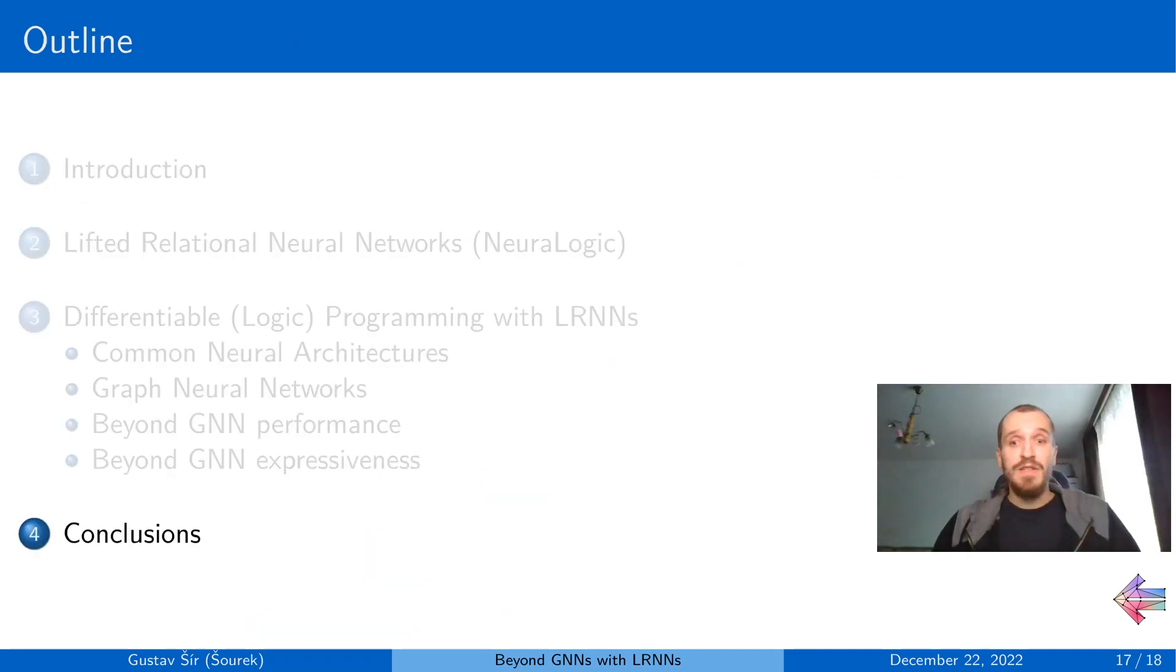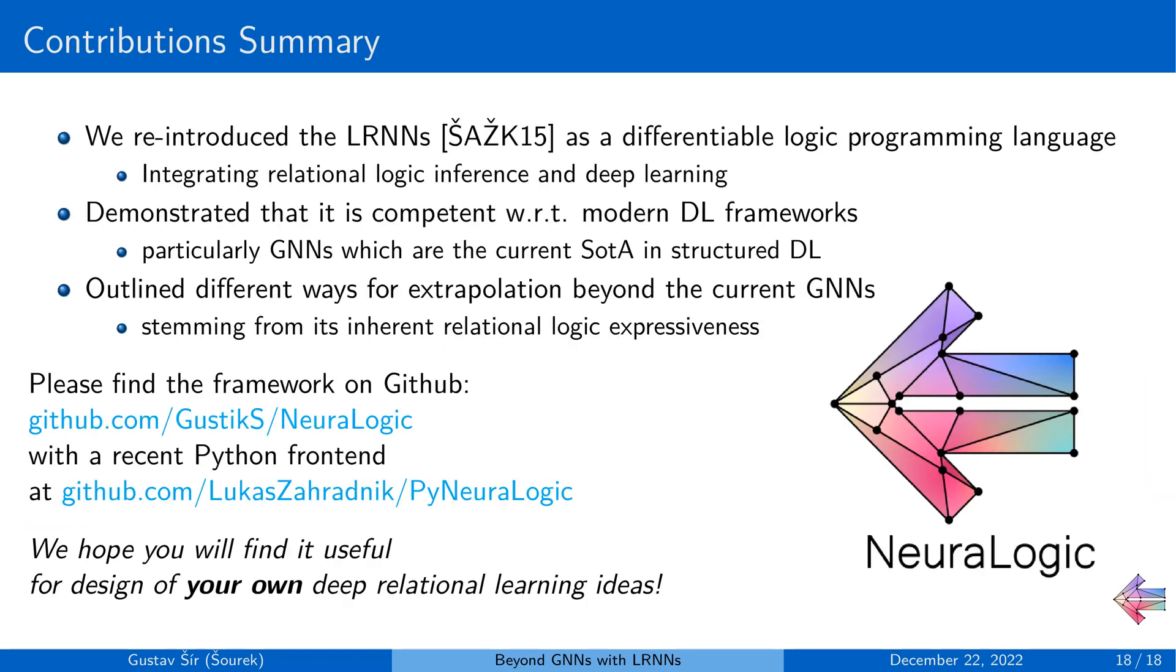So that was the increased expressiveness that the framework provides, and with that we can conclude what we did here. So we reintroduced the old lifted relational neural networks framework as a differentiable logic programming language for integrating relational logic inference and modern deep learning architectures. We demonstrated that it's competent with respect to modern deep learning frameworks, particularly in the GNN domain, and we outlined different ways for extrapolation beyond the current state of art in the GNN domain, which is stemming from the inherent relational logic expressiveness of the framework.